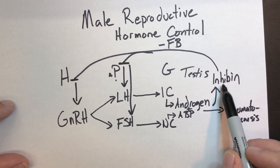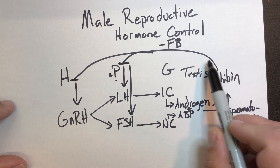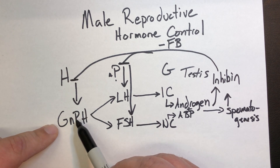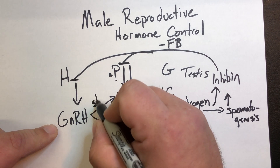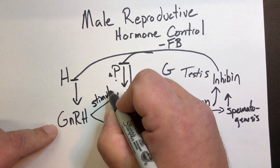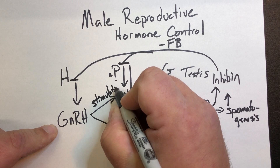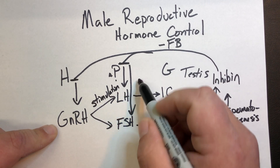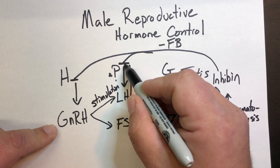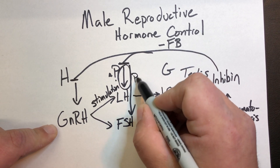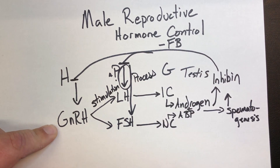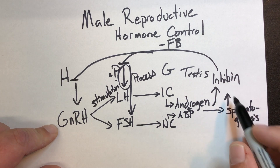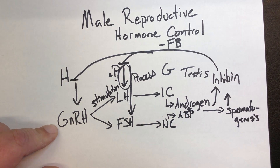As inhibin goes up, GnRH goes down, which removes the stimulation to produce LH and FSH, but also directly inhibits LH and FSH production. As a result, inhibin inhibits androgen and ABP, which inhibits spermatogenesis.